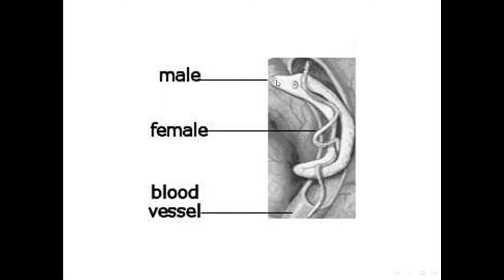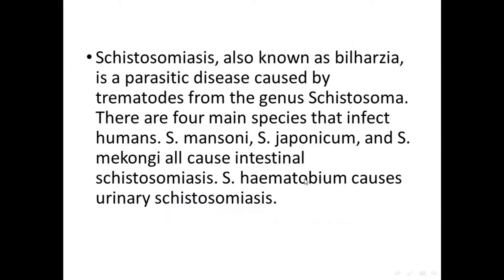هاي الصورة تبين أكتر عنا الـ male and the female and the blood vessels where they are located. Schistosomiasis — the disease يلي بسببه الـ Schistosoma — also known as bilharzia — عبارة عن parasitic disease caused by trematodes from the genus Schistosoma.